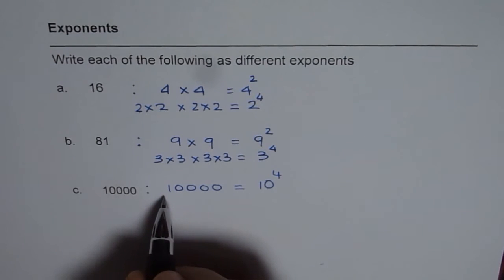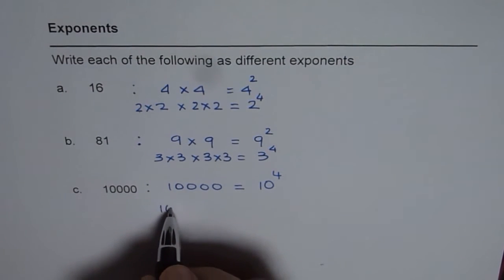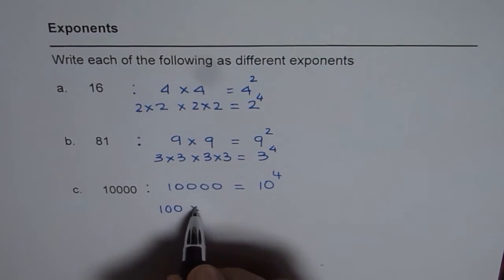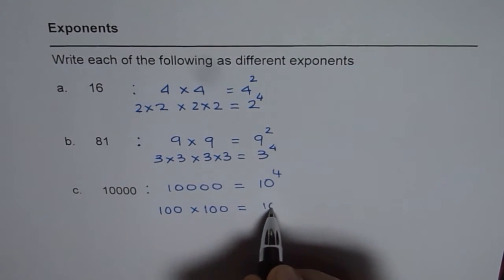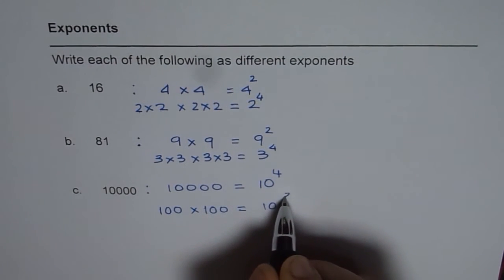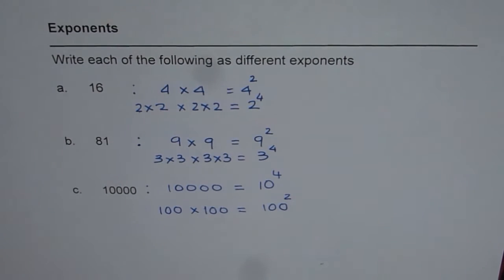But you can also think 10,000 as 2 zeros, that means 100 times 100. And we can say 10,000 is 100 squared. So that is how you can write a number in different forms.